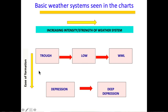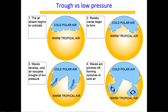These systems are also listed in terms of ease of formation. Troughs are very easy to form and are routinely observed on a day-to-day basis, whereas cyclones are difficult to form — unless all the parameters come together, it's not easy to form a system such as a cyclone or even a deep depression.